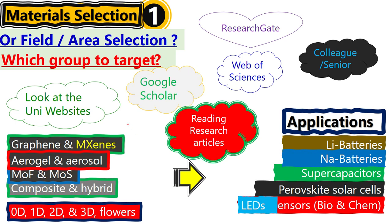In this video I am going to show you how you are going to choose your field of study, which area you have to target — the material selection basically. I will explain all these tips which will help you in finding your research groups or your target area. For instance, how university websites will help, Google Scholar, Web of Science, ResearchGate, and reading research articles.